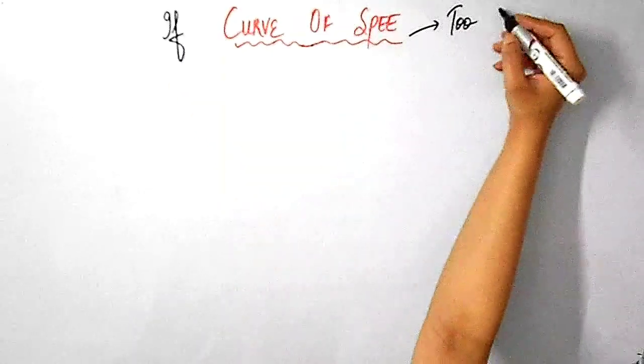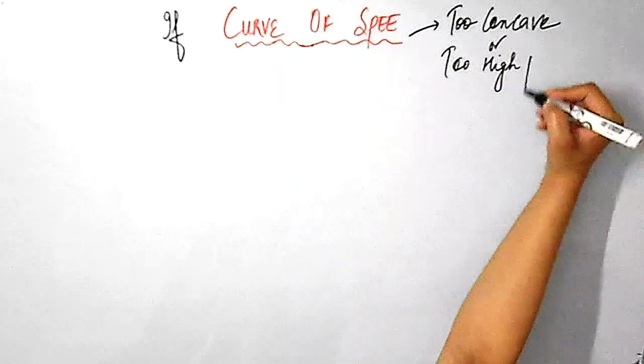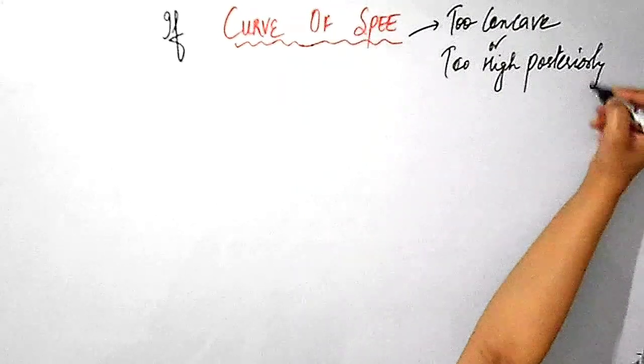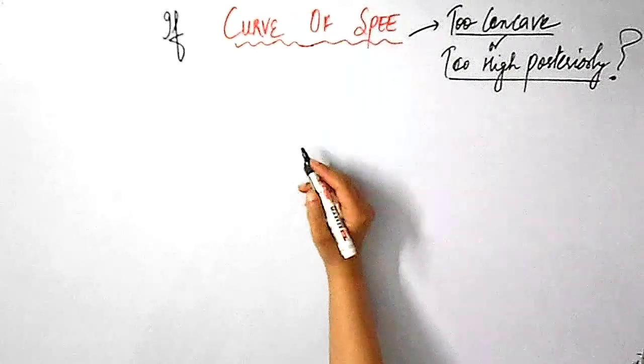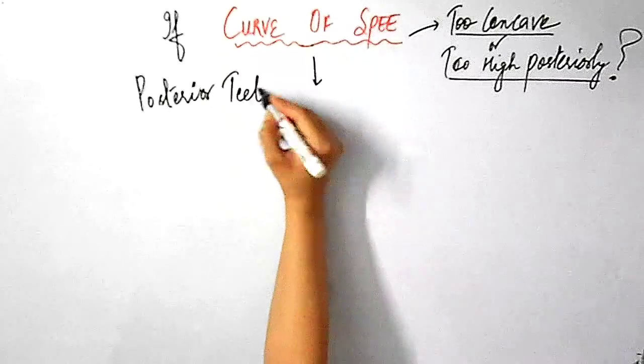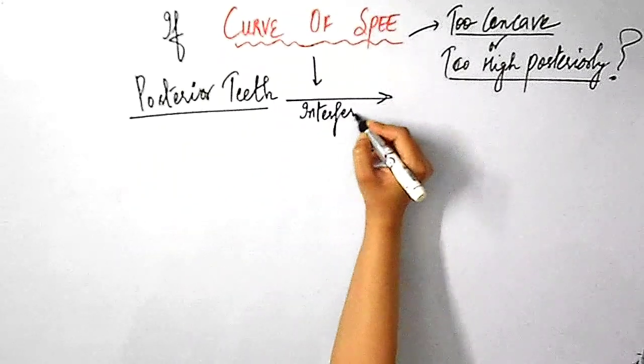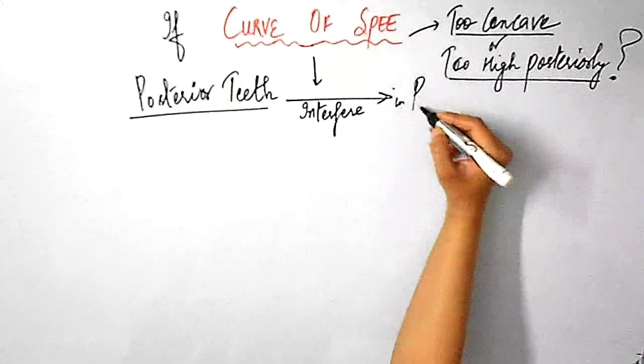So, the next question which arises is that what will happen if the curve of Spee is too concave or if it's too high posteriorly? So, if the curve of Spee is too concave or if it is too high posteriorly, one or more posterior teeth may interfere in the protrusive movements.